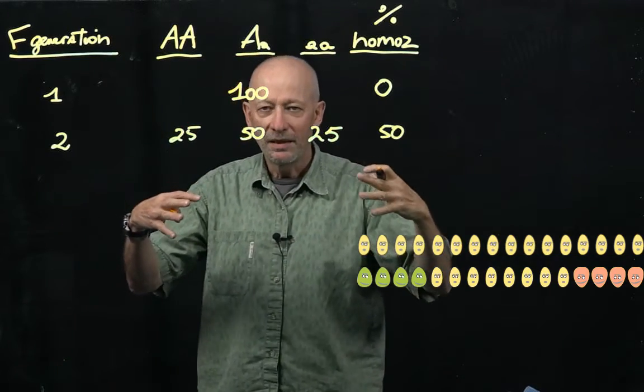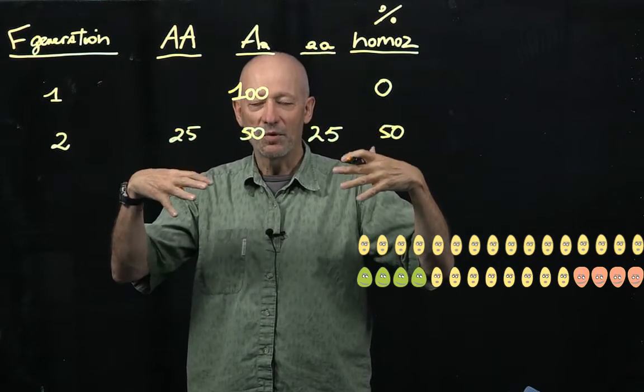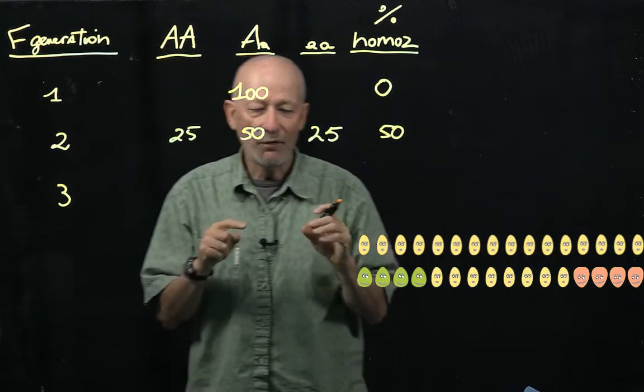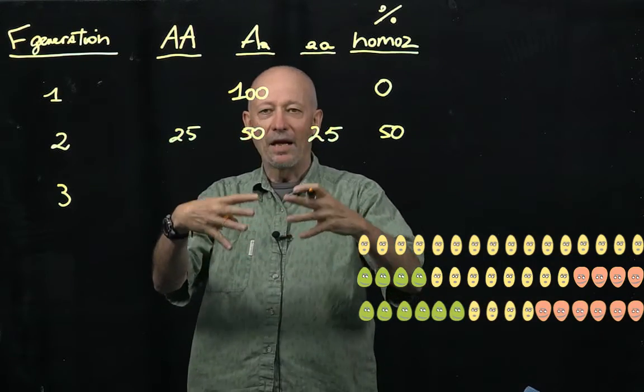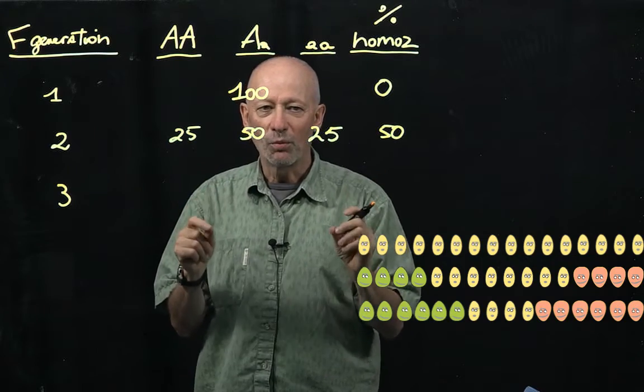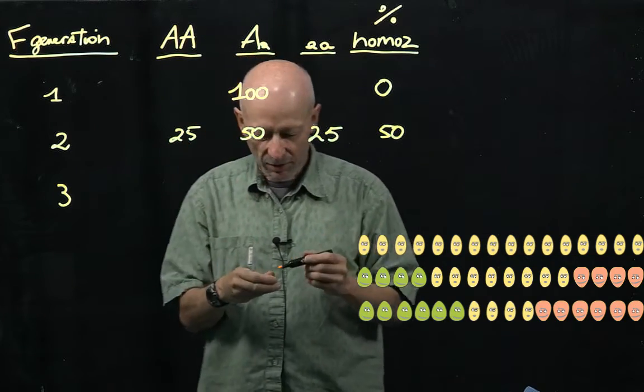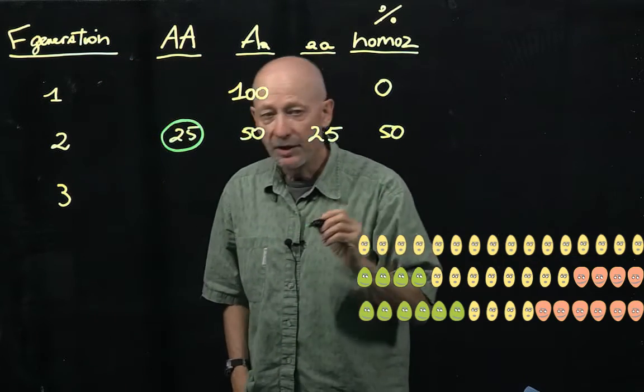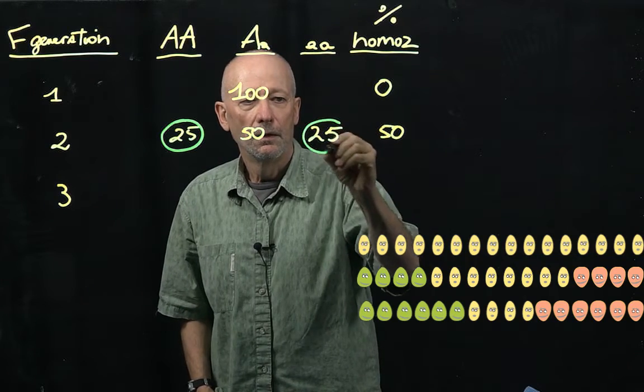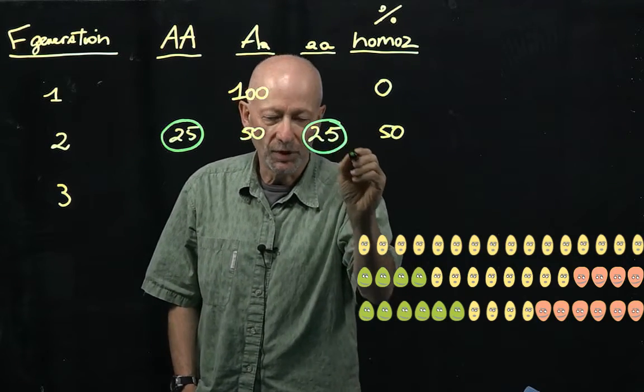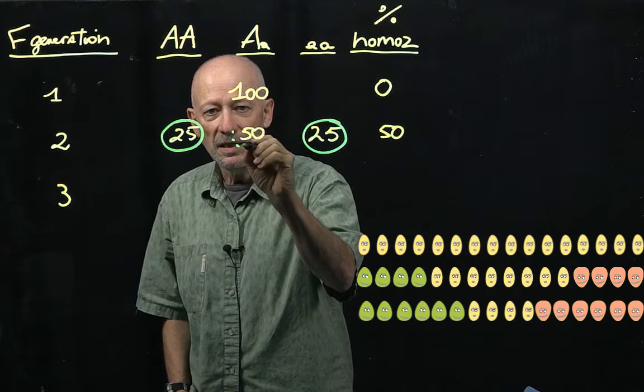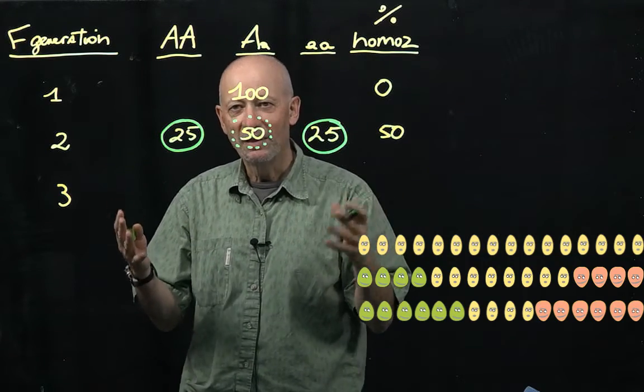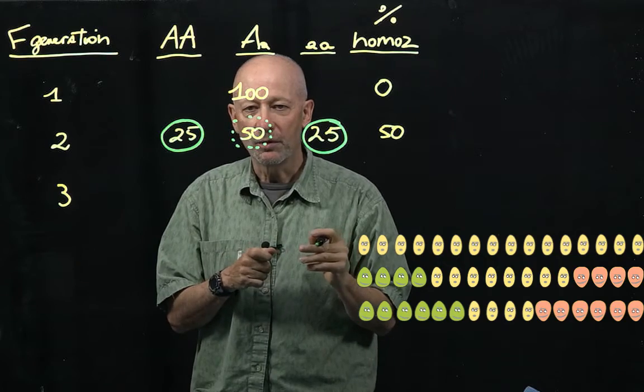Now let's do this experiment again. We're going to carry these 100 plants, allow them to self. Then go to the next generation, which is the F3. And now in that F3, we're going to sample at random 100 plants, and we're going to look to see what we find. You know that in fact, all these plants here are going to generate homozygotes, right? This would be 100% homozygote production. The plants here instead are going to behave like the F1 hybrid. They are heterozygotes, and therefore will produce a 1 to 2 to 1 ratio.